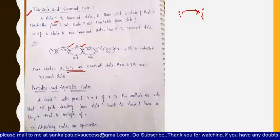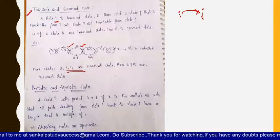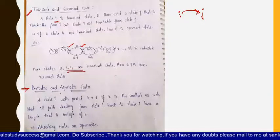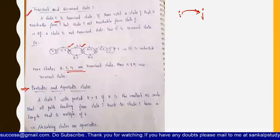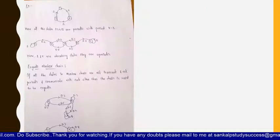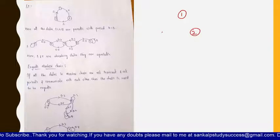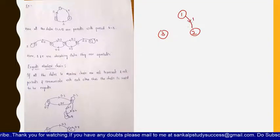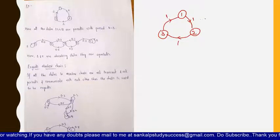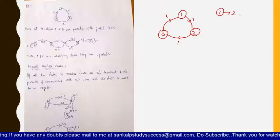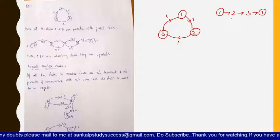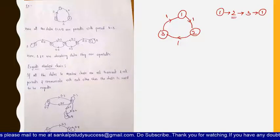Now coming to periodic and aperiodic states. If from each and every state you visit every state present in the diagram with a cycle length of k — for example, with states one, two, and three where one goes to two, two goes to three, and three goes back to one — then from one you can reach two, then three, then again one, visiting two other states.